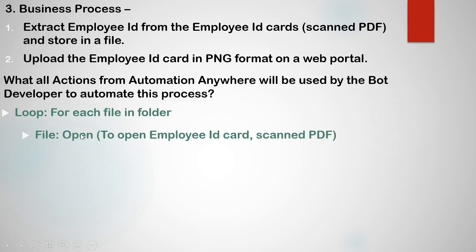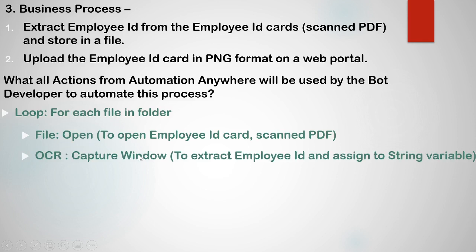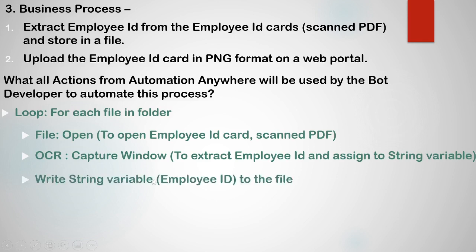We are going to open the employee ID card, which is a scanned PDF, using the file open action. Once the file is opened, we require to extract the employee IDs, for which we are going to use the OCR capture window action, which extracts the employee ID and assigns it to a string variable. Once the employee ID is extracted, we can write that string variable into the file.